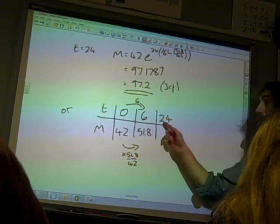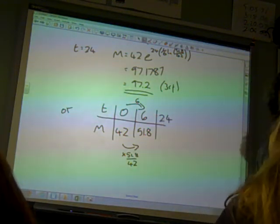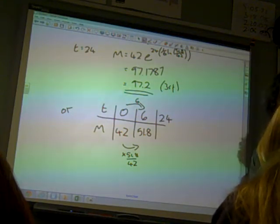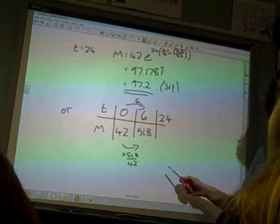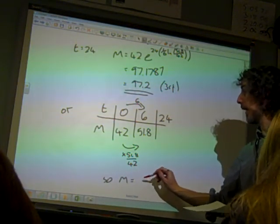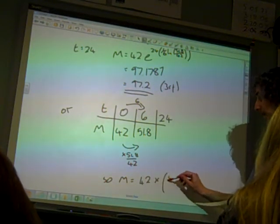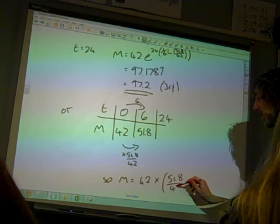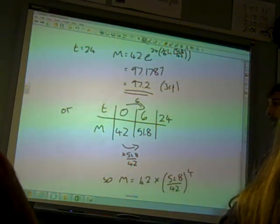So to get to 24, we're going up by 6 four times. So we need to multiply by that four times. So our answer is, what would it be? 42 times that to the fourth. And do it that way. And that gives you the same answer. 97.2.